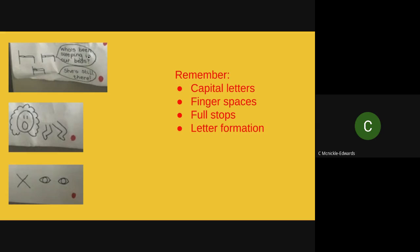We're going to split this into two sentences — do this part first, write that down, then the next part. Who's been sleeping in our beds, growled the bears. Say that with me — who's been sleeping in our beds, growled the bears. Pause the video while you write that part down. Then the second part — she's still there, squeaked Baby Bear. Join in with me — she's still there, squeaked Baby Bear. Pause the video while you write down the second part of that sentence.